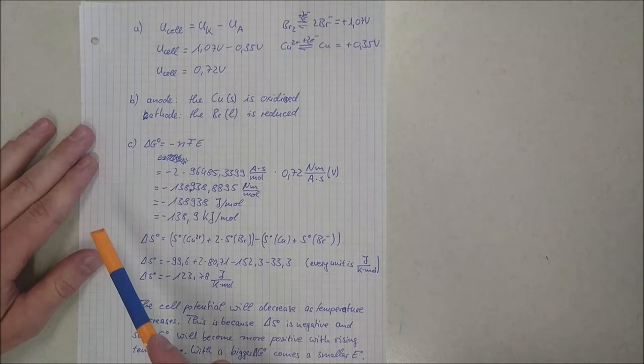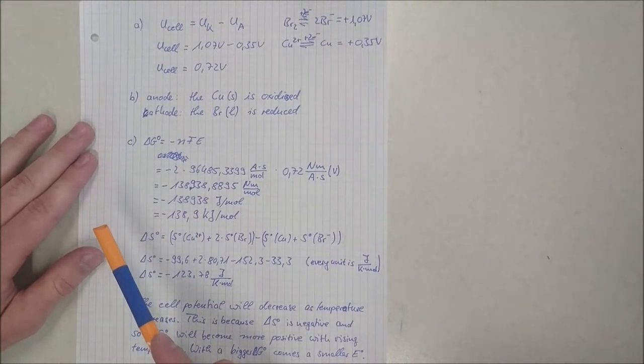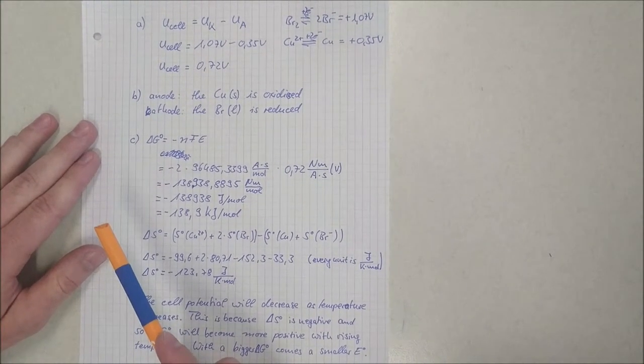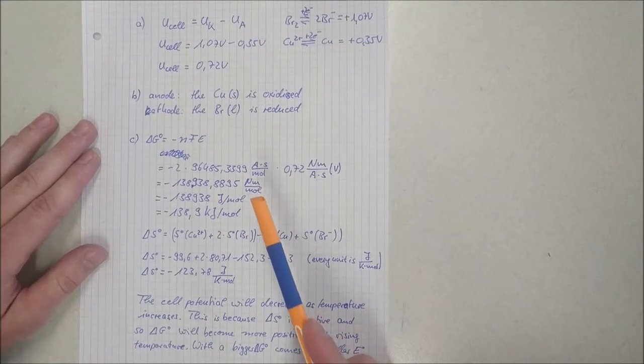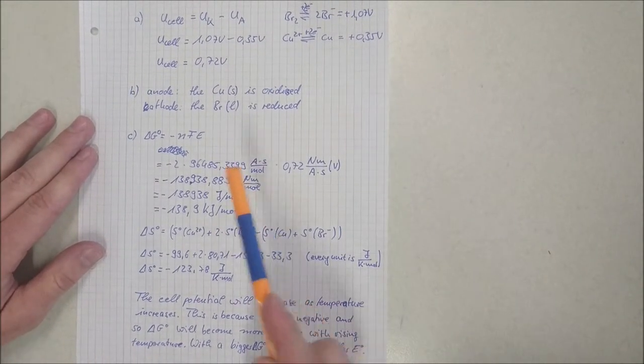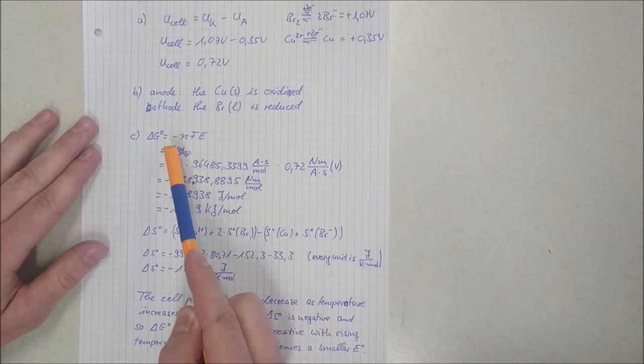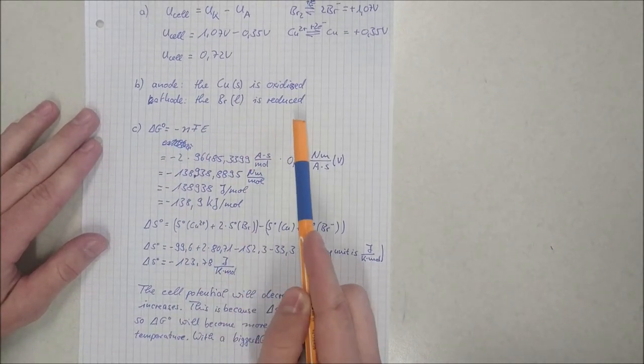The second task is: which reaction occurs at the cathode and which at the anode? At the anode, the copper is oxidized, and at the cathode, the bromine is reduced.